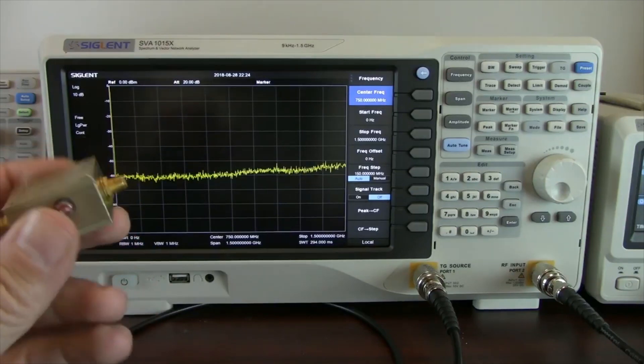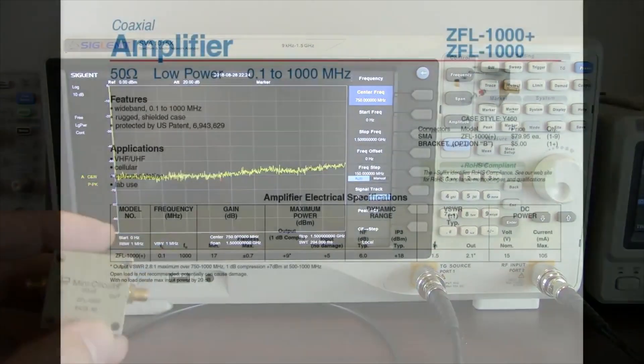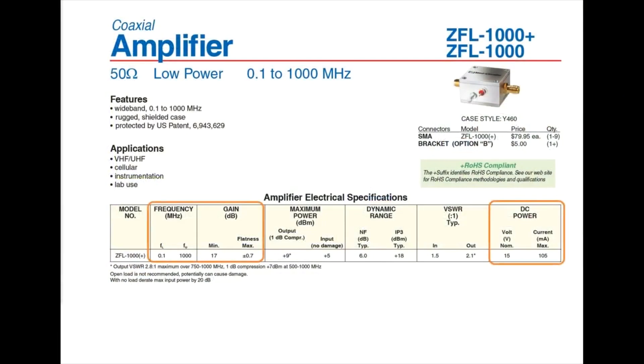This is a MiniCircuit ZFL 1000 series, and per the datasheet, it's meant to operate from 100 kilohertz up to 1 gig, and it's meant to have about a 17 dB gain.